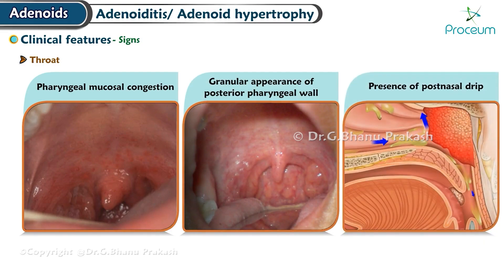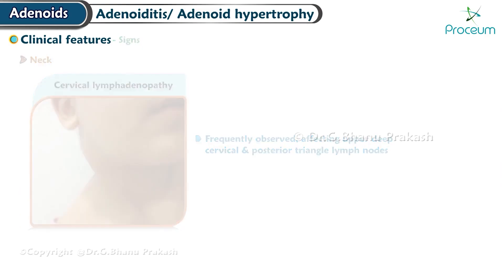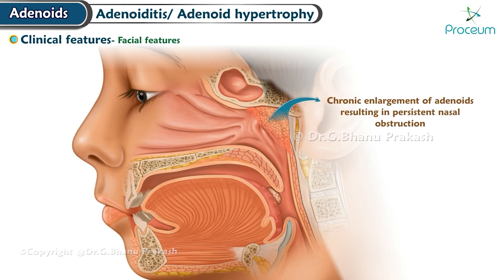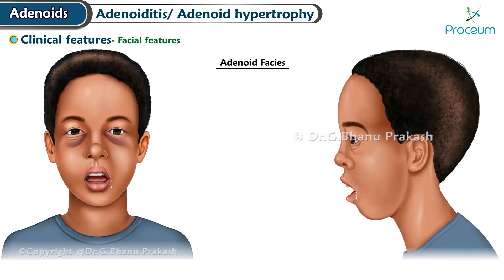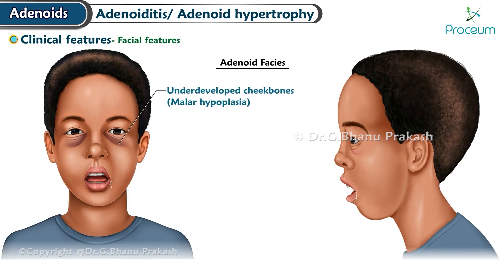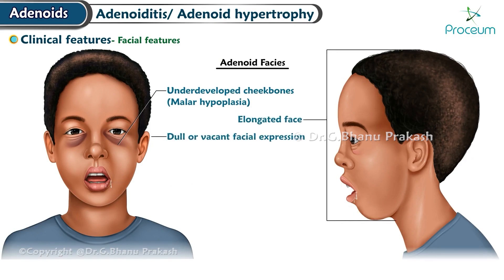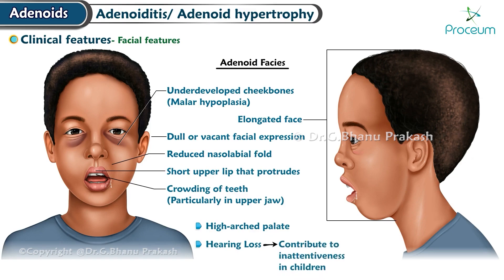Throat: pharyngeal mucosal congestion with a granular appearance of the posterior pharyngeal wall, and presence of post-nasal drip. Neck: cervical lymphadenopathy is frequently observed, affecting the upper deep cervical and posterior triangle lymph nodes. Facial features — adenoid facies: chronic enlargement of the adenoids resulting in persistent nasal obstruction can lead to various facial characteristics, including narrowed or pinched nose, habitual mouth breathing, saliva dribbling, flattened nasal arch, underdeveloped cheekbones (malar hypoplasia), elongated face, dull or vacant facial expression, reduced nasolabial fold, and a short upper lip that protrudes.